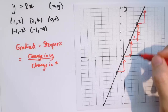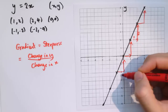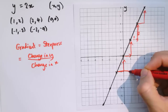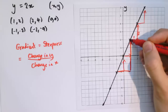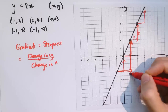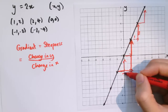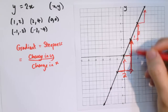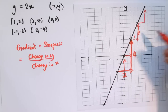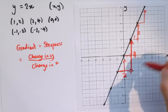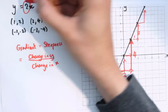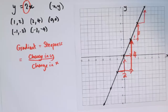We don't have to go just one unit at a time. If we go from one point all the way to another, the change in x would be 2 and the change in y would be 4 — giving us the same gradient of 2. And we can see we've got y equals 2x, so the gradient is 2.